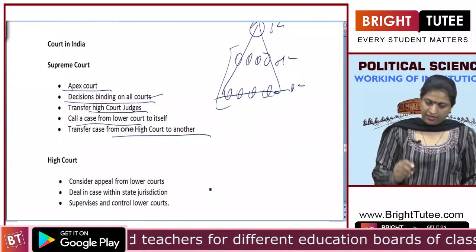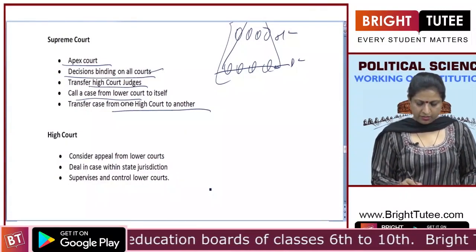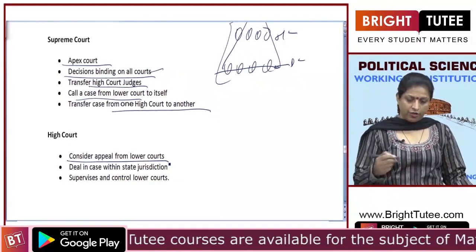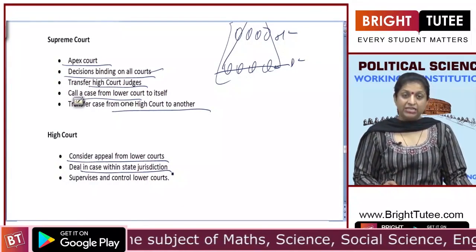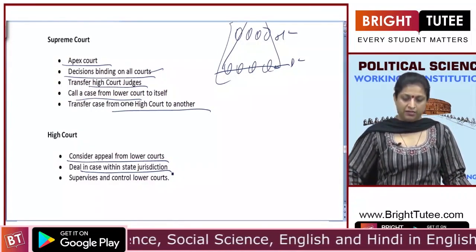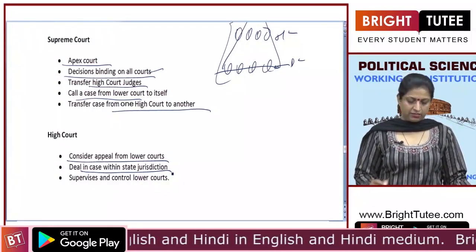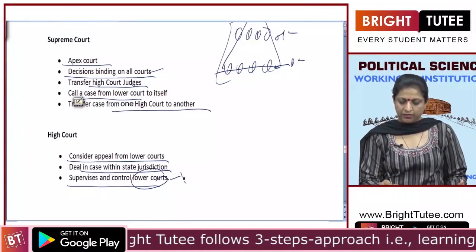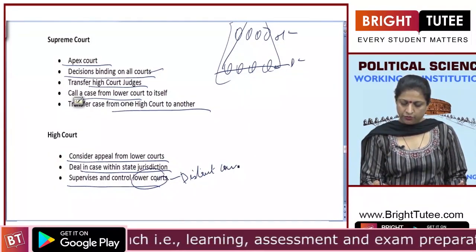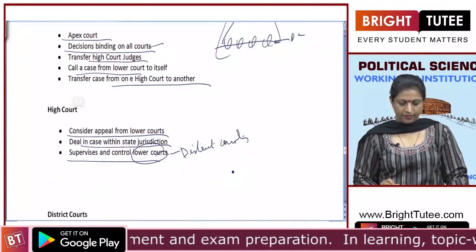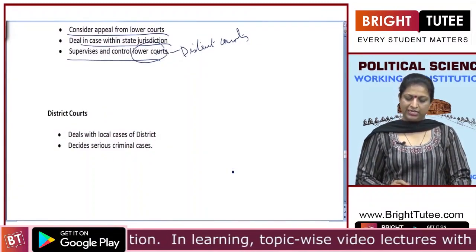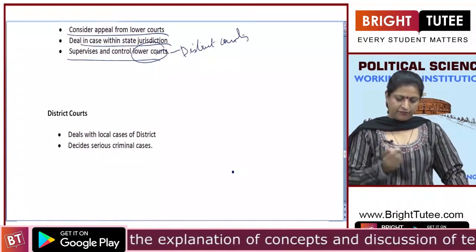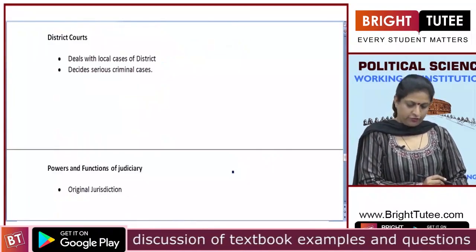Next to the Supreme Court, we have High Courts, which act as courts of appeal from District Courts. High Courts deal with cases within state jurisdiction and also supervise and control the lower District Courts. District Courts deal with local cases of the districts, including serious criminal cases and civil cases.